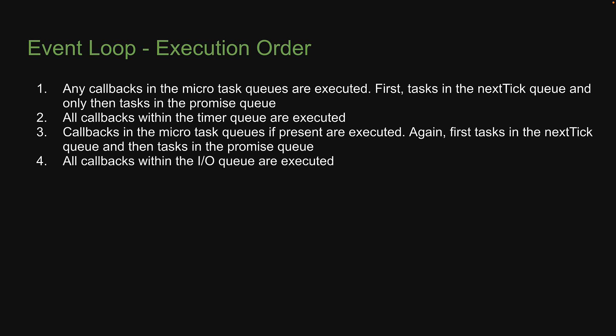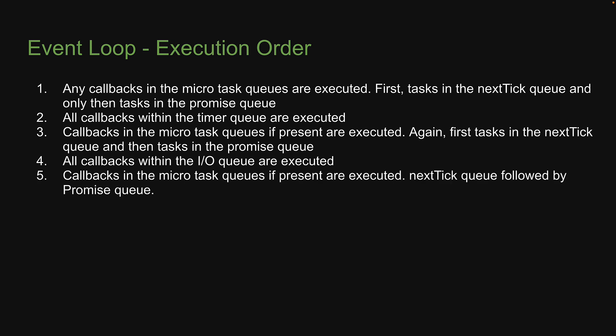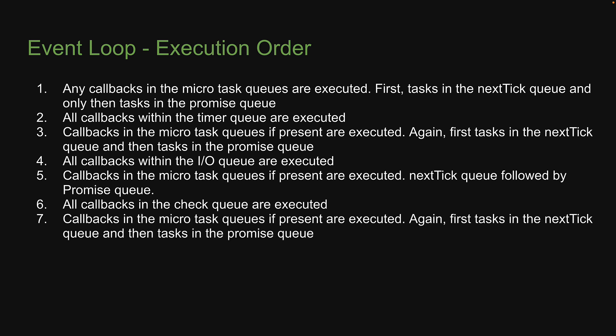Step 4: All callbacks within the IO queue are executed. Step 5: Callbacks in the microtask queues, if present, are executed — nextTick queue, followed by promise queue. Step 6: All callbacks in the check queue are executed. Step 7: Callbacks in the microtask queues, if present, are executed after every callback in the check queue — again, first tasks in the nextTick queue, and then tasks in the promise queue.